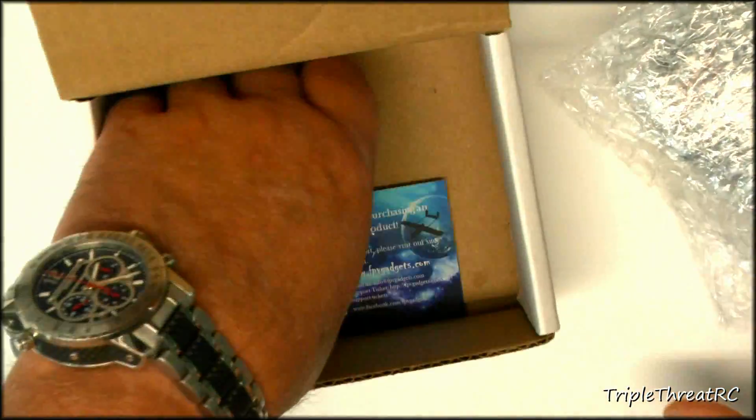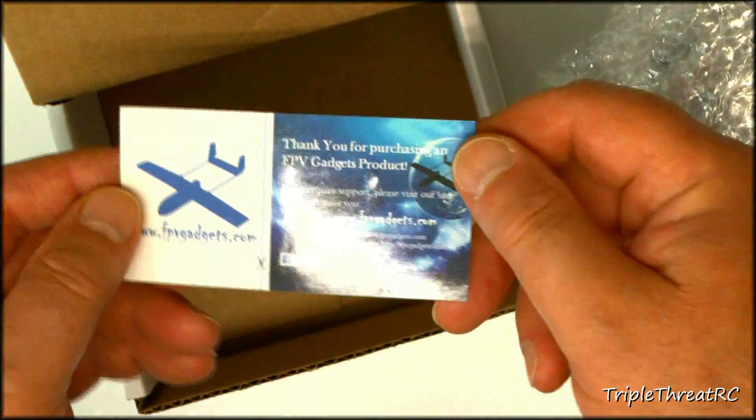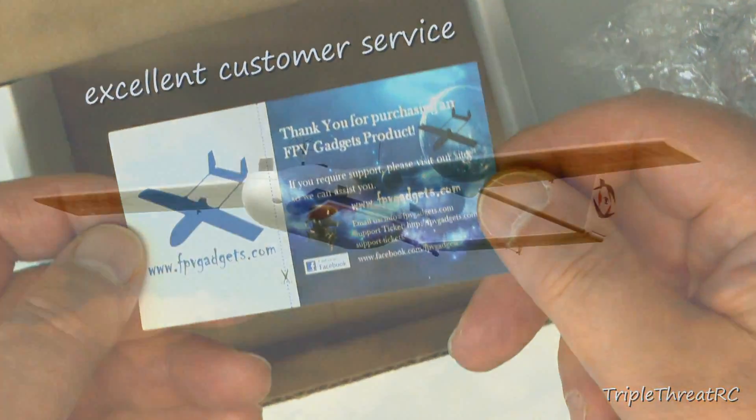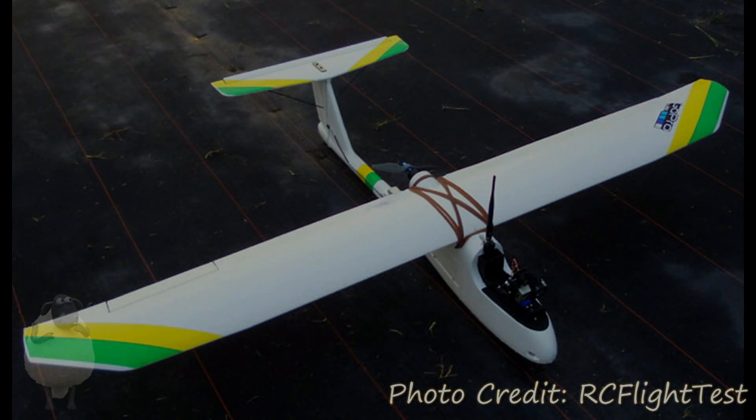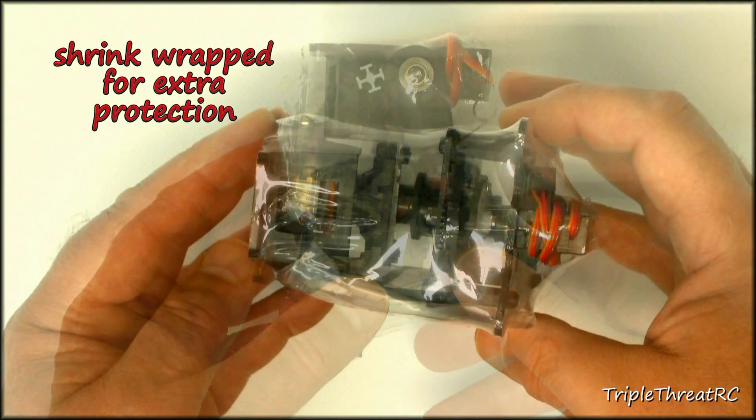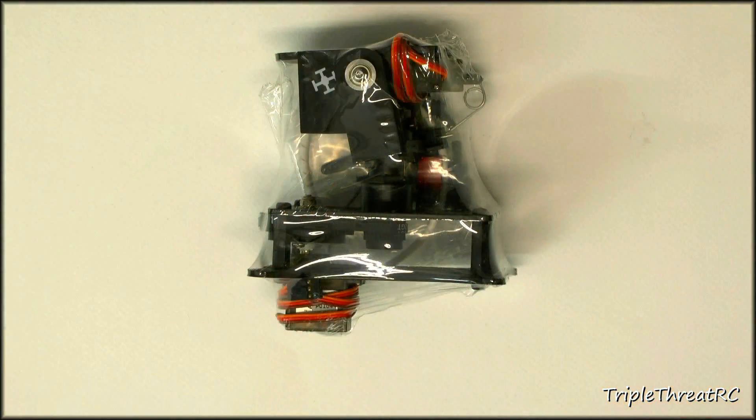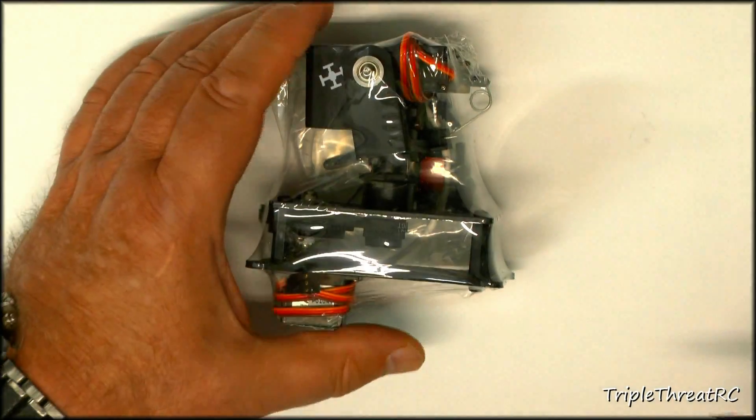The ProPan is a very well-engineered FPV pan and tilt unit for your small to medium-size FPV planes, such as the Sky Hunter or the Skywalker. Planes like that are going to be a perfect fit for a pan and tilt unit like this.